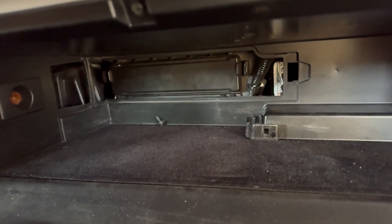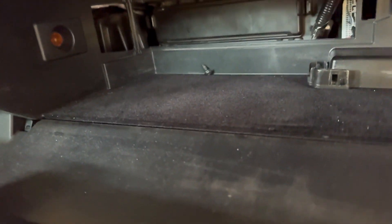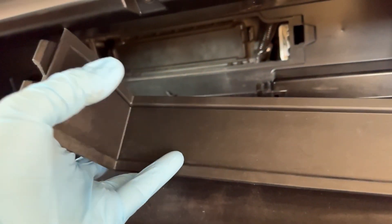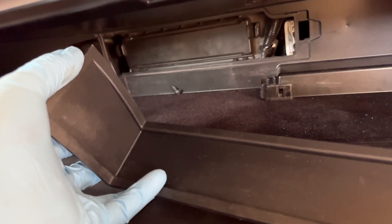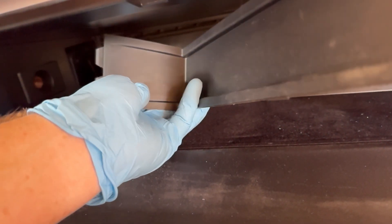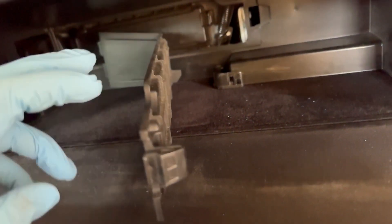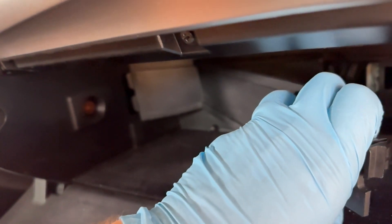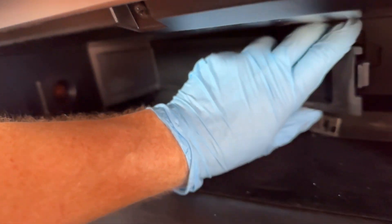Then you need to put in the outer panel. There are two tabs that need to slide in on the far left side. Once you get those slid in place, it just clips back in on the right hand side.